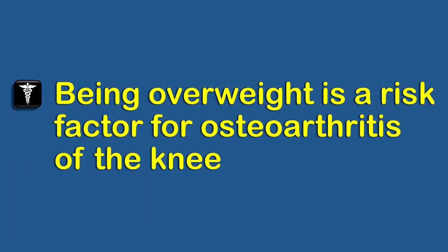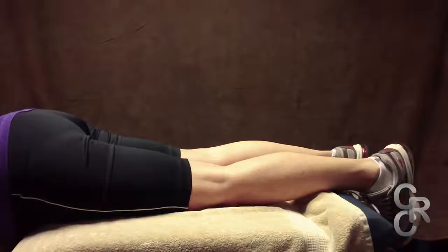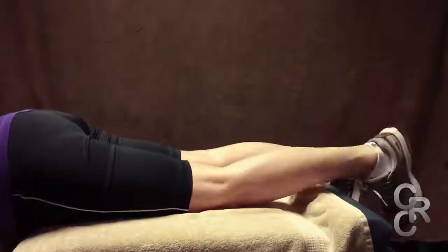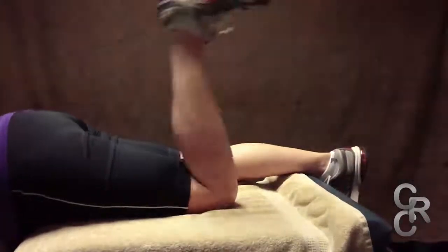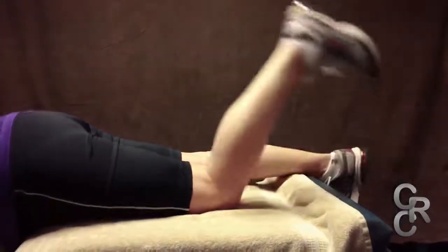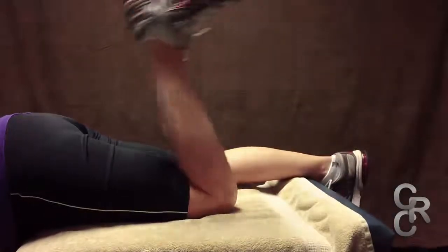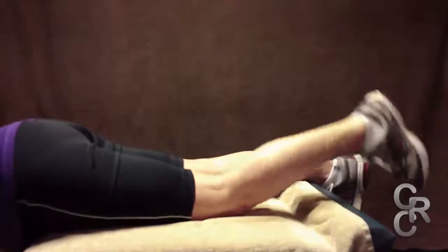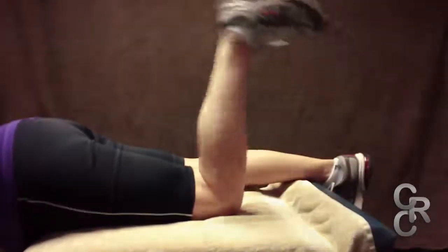Lay comfortably on your stomach and do not arch the lower back. Bend the knee, bringing the heel back towards the buttock. Do not push through any pain — stop at the point of pain. Keep working the exercise to improve knee flexion. Perform for 30 seconds. This exercise helps to strengthen the hamstrings and the gluteus or buttock muscles.